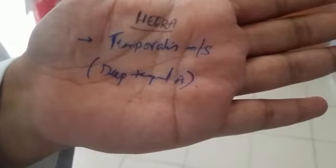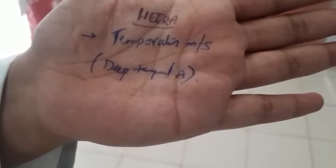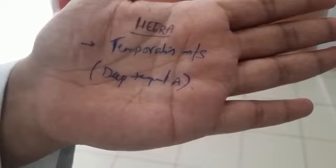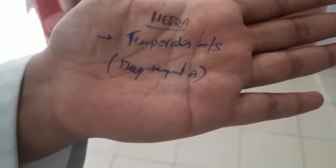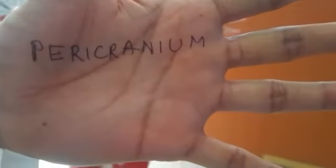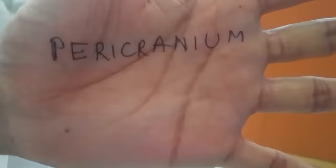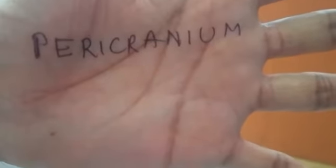Next I reach the temporalis muscle fascia, and below it is the temporalis muscle wherein we find the deep temporal arteries. If I cross and cut through this, I reach the pericranium — the bulky thick tissue upon the bone of the skull.